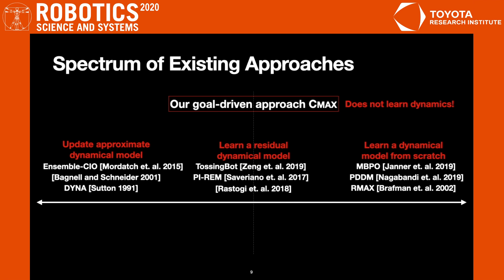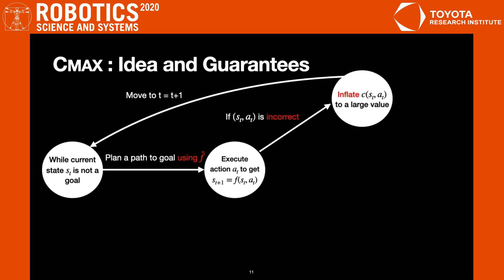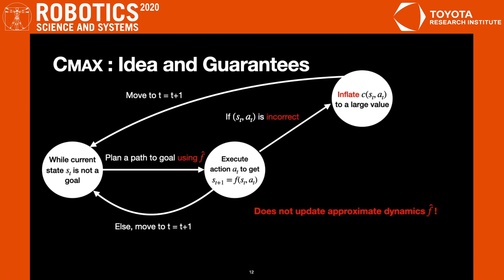But unlike all of these works, CMAX does not learn or update the dynamics and is heavily goal-driven. The idea of CMAX is very simple. During online execution, while the current state is not a goal, CMAX plans a path from the current state to the goal using the approximate dynamical model. It then proceeds to execute the planned action online. If we notice a discrepancy in the dynamics — in other words, the transition was incorrect — then we simply inflate the cost of the executed transition to a large value, thereby forcing the planner to avoid using this transition unless there is no other choice. Subsequently, we move on to the next time step and repeat. Crucially, CMAX never updates the approximate dynamical model f-hat and does not seek to learn the true dynamics.